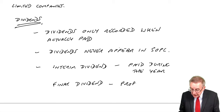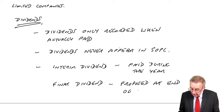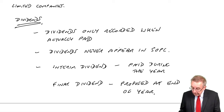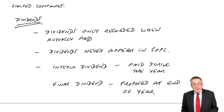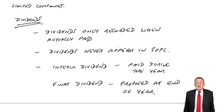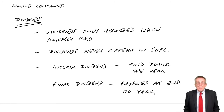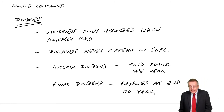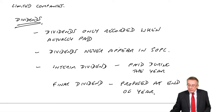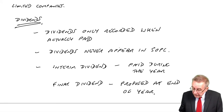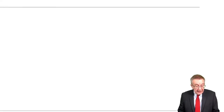The final dividend is proposed at the end of the year, but as mentioned, it won't be paid at the end of the year. Only when the profits are known can we decide on the final dividend, so the actual payment will be in the following year.